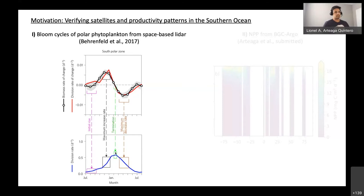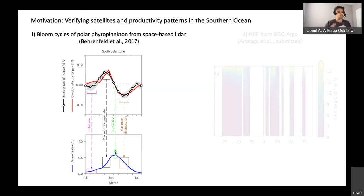The second project is more directly focused on estimating vertically resolved primary production using information from the floats. The floats give us vertically resolved biomass profiles, which is something really hard for satellites to do. With this vertically resolved information, we can complement earlier productivity studies from satellites and get a fuller view of productivity in the global ocean.